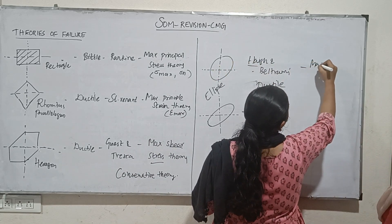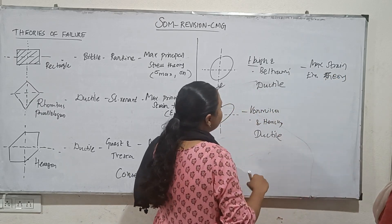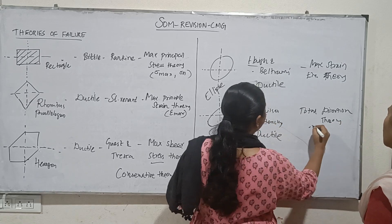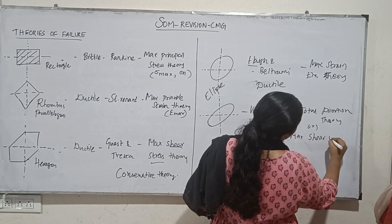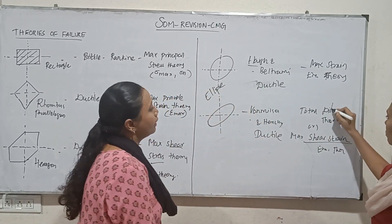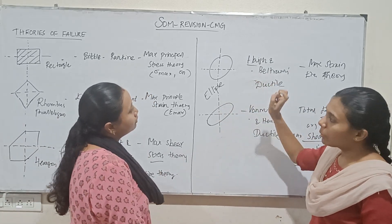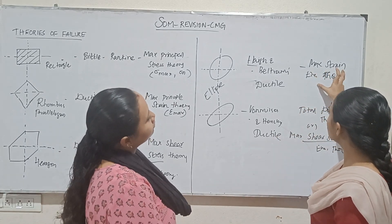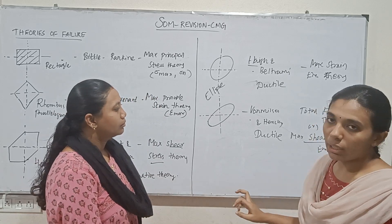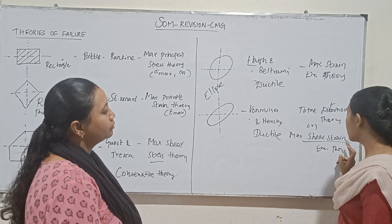Maximum strain energy theory. What is this energy? Total distortion. Total distortion theory, or Maximum Shear Strain Energy Theory. Round ellipse, flat ellipse. Maximum strain theory — flat ellipse. Total distortion theory, Maximum Shear Strain Energy Theory.